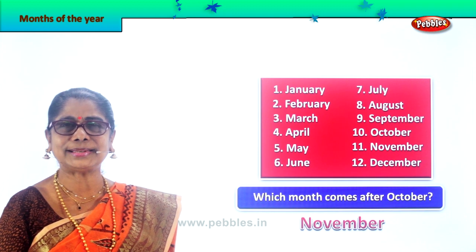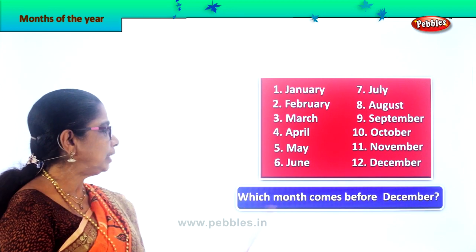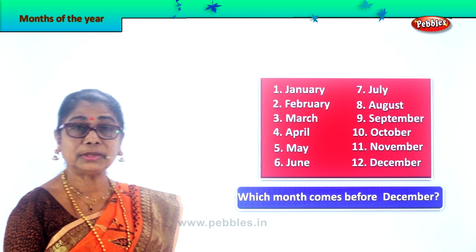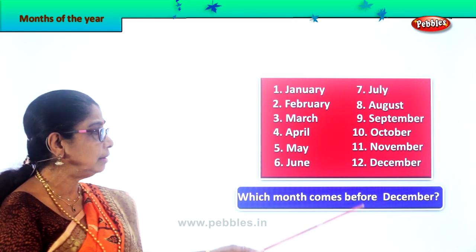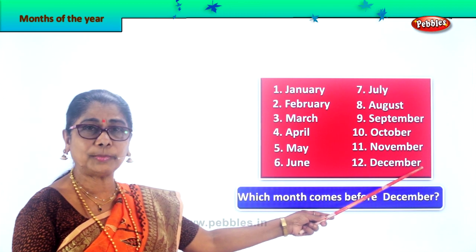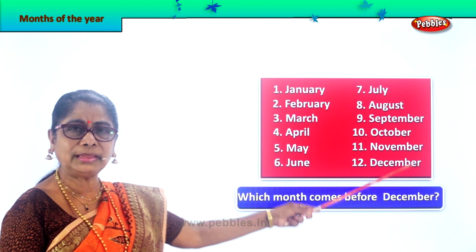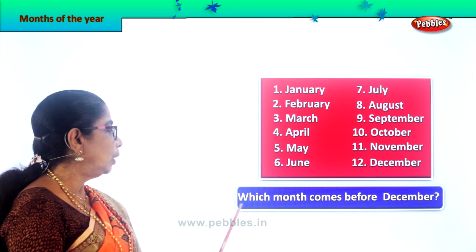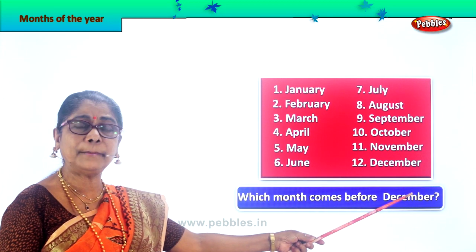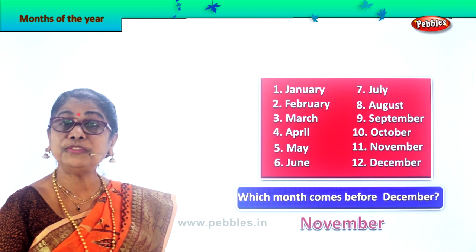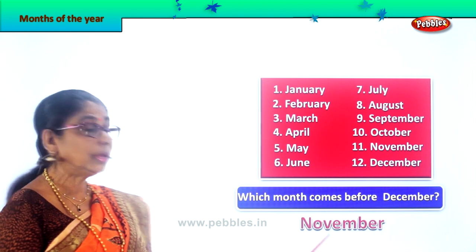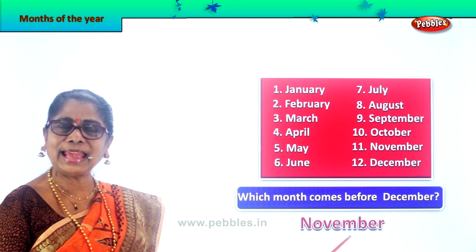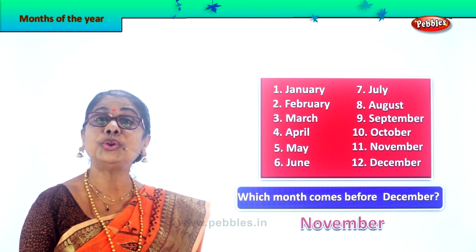Let's take another question. Which month comes before December? Which is the last month of the year? December is the last month of the year. And which is the month that comes before December? November. The month of November comes before December. Spell November — N-O-V-E-M-B-E-R, November.